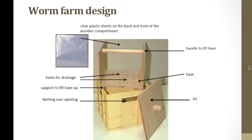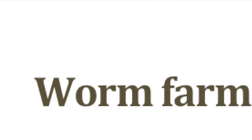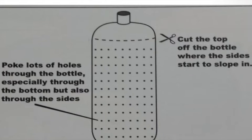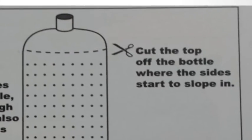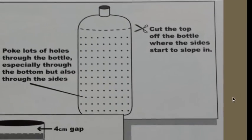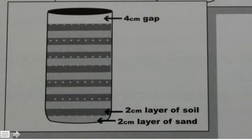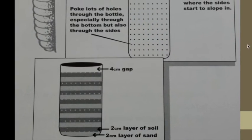The simpler design of a mini worm farm for junior primary students could be made out of a plastic bottle with the top cut off and holes poked through the sides and bottom of the bottle to drain excess liquid as well as to provide ventilation. And the layers of sand as shown in this slide also help to stop the soil from becoming too wet.